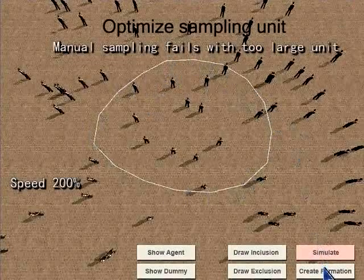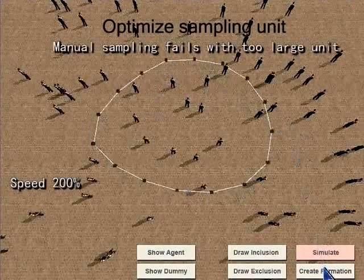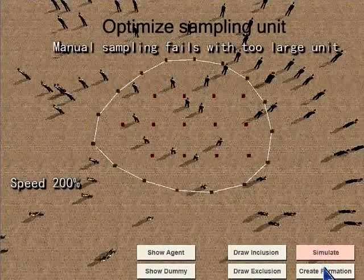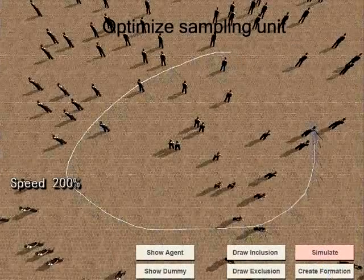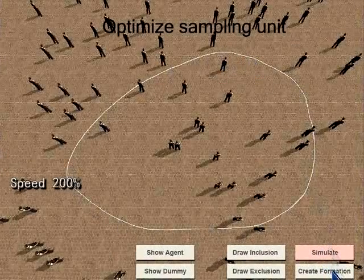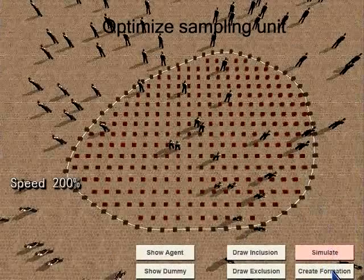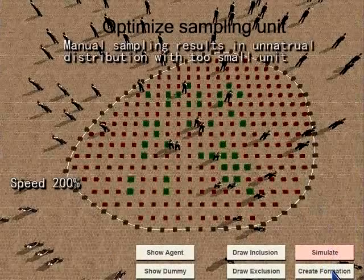Inappropriate sampling rate may degrade the results with too many or too few agents filled inside the template. Hence, the sampling optimization is important to generate more natural-looking formations.